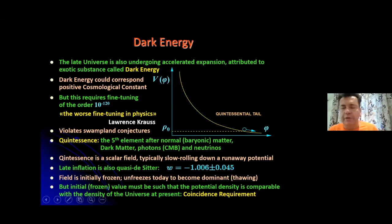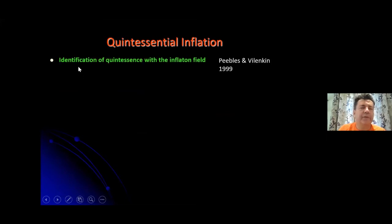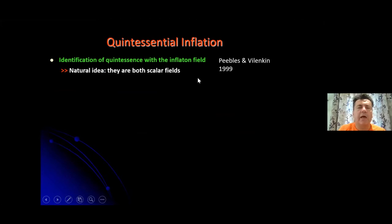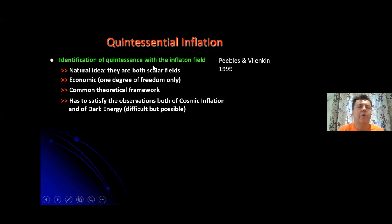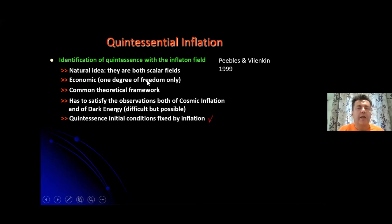One way to explain the coincidence requirement is quintessential inflation — the identification of the quintessence field with the inflaton field, put forward originally by Peebles and Vilenkin at the end of the previous century. It has several merits: it's a natural idea since both fields are scalar fields; it's economic, requiring only one degree of freedom to explain both periods of acceleration; the two periods can be treated in a common theoretical framework; and the quintessence initial conditions (the coincidence requirement) are fixed by the inflationary attractor. A successful model must satisfy observations of both cosmic inflation and dark energy.